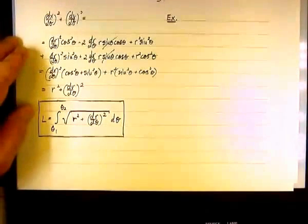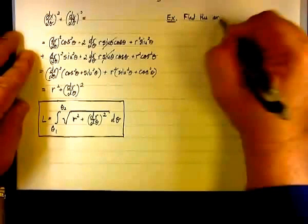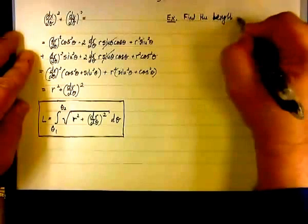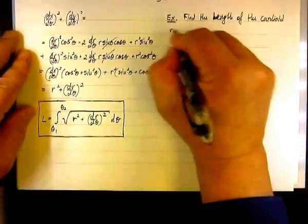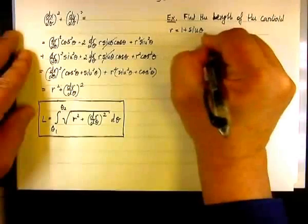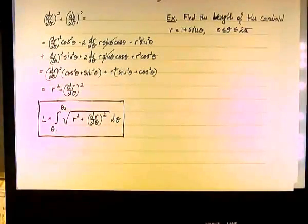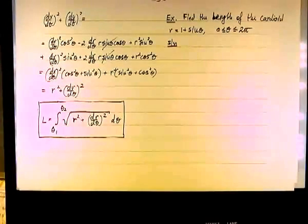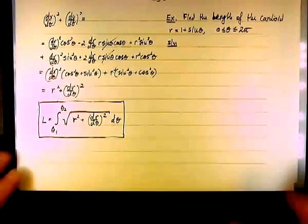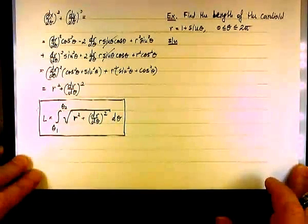In this example we want to find the length of the cardioid r equals 1 plus sine theta as theta goes from 0 to 2 pi. This is an interesting problem for two reasons: one, the integration technique, and two, the result is unexpected. There is a lesson to learn from the unexpected results.